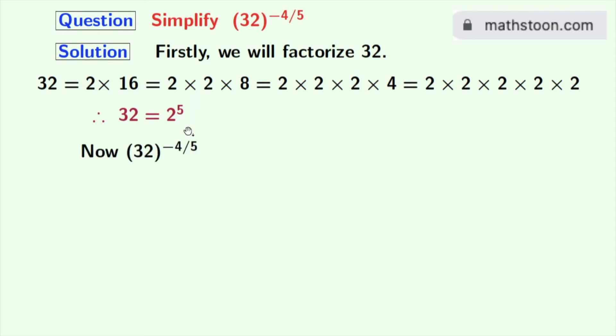Now our given quantity is 32 whole power minus 4 by 5. Using this fact, we can express this quantity as 2 power 5 whole power minus 4 by 5. Now we will rearrange this as 2 power 5 times minus 4 by 5.